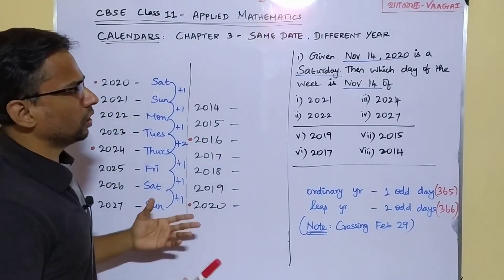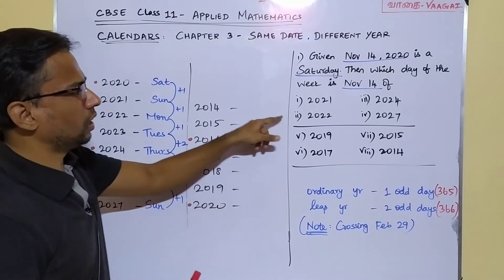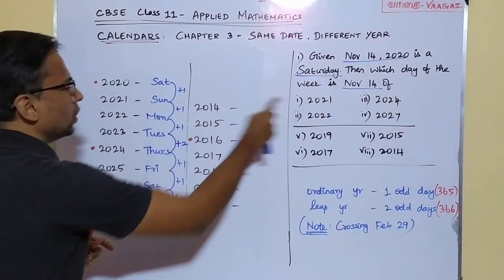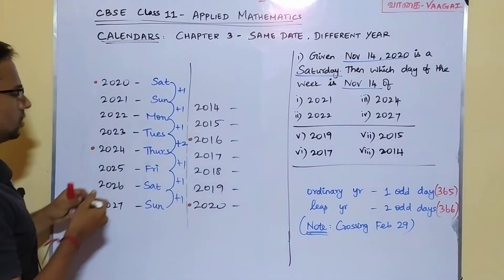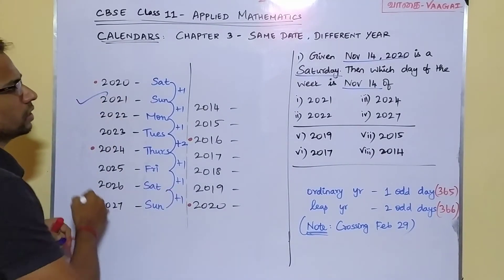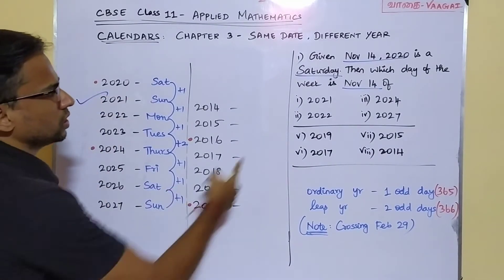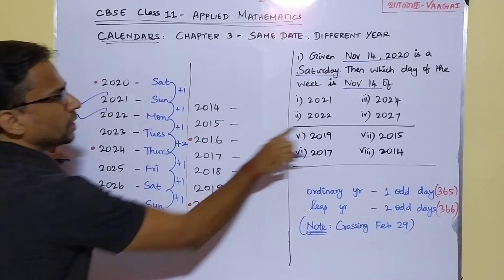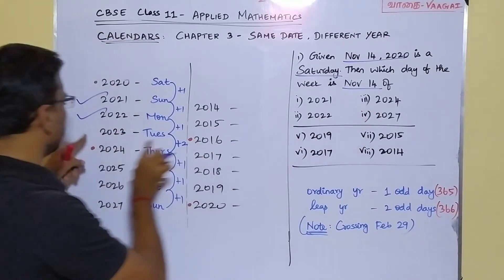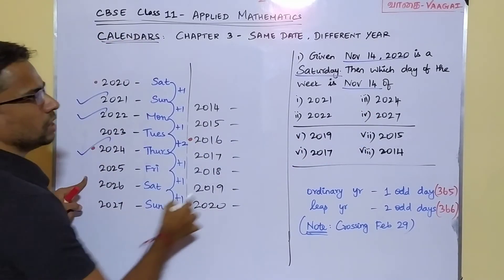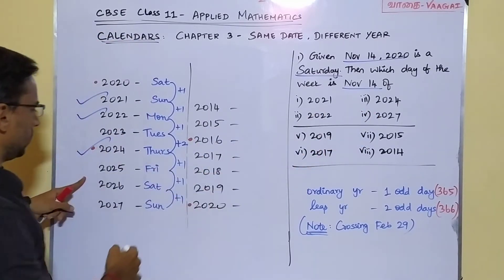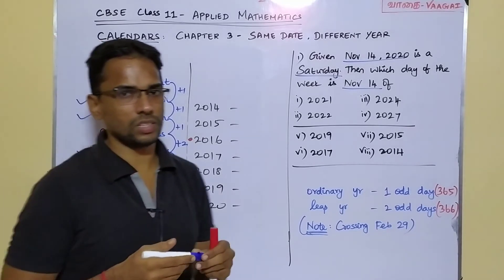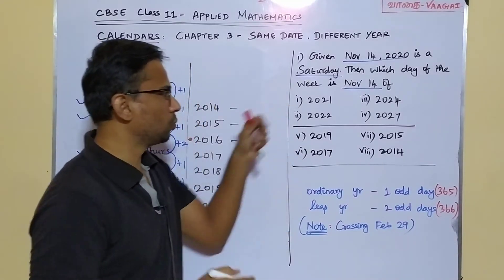So we have got answers for all the years in Group 1: 2021 is Sunday, 2022 is Monday, 2024 is Thursday, and 2027 is Sunday. Those are the answers for our first group of questions.